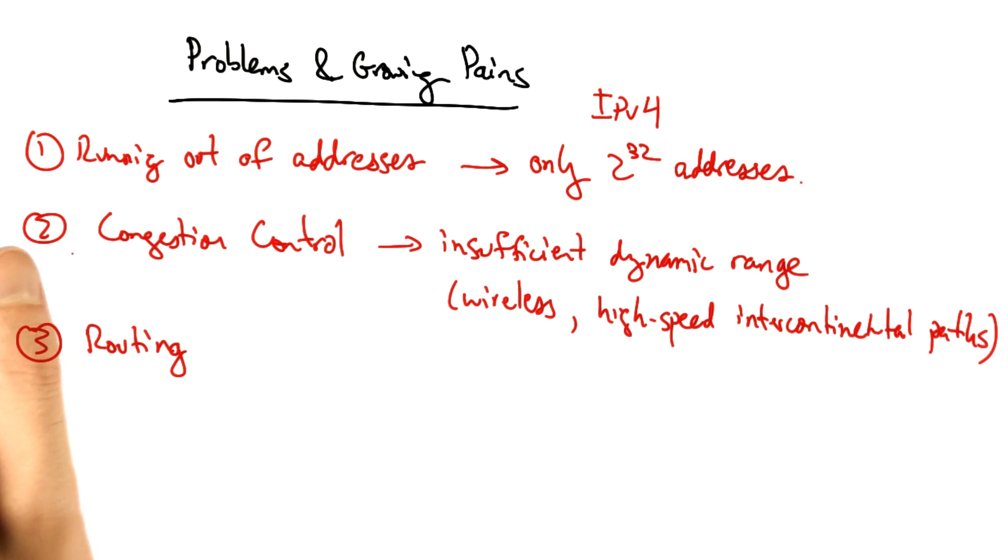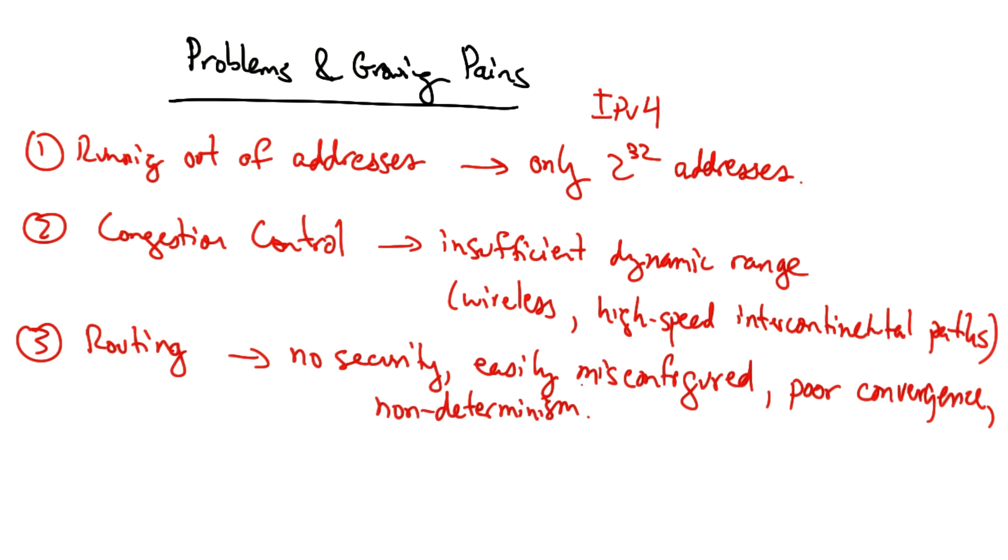A third major problem is routing. Routing is the process by which nodes on the internet discover paths to take to reach another destination. Today's interdomain routing protocol, BGP, suffers a number of ills, including a lack of security, ease of misconfiguration, poor convergence, and non-determinism. But it sort of works, and it's the most critical piece of the internet infrastructure, in some sense, because it's the glue that holds all of the internet service providers together.